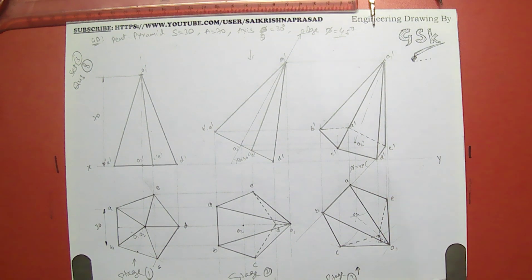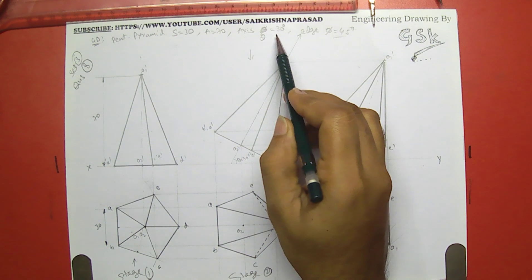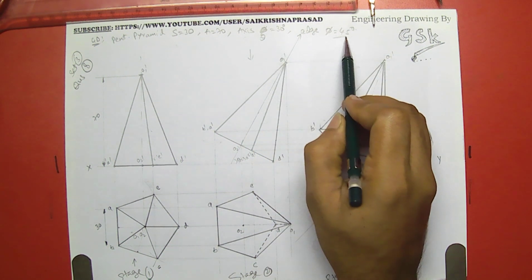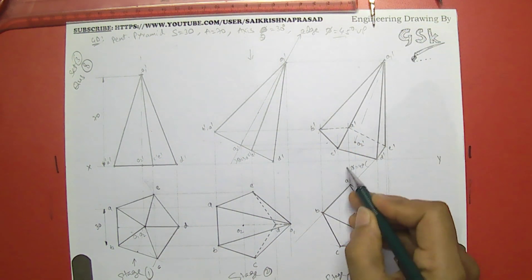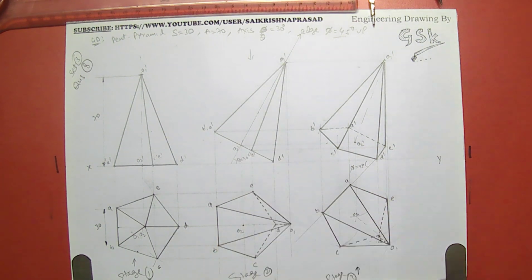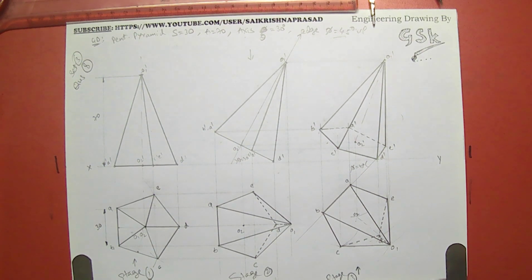In this way we draw the projections of a pentagonal pyramid with side 30 and axis 70, with the axis inclined at 30 degrees to the HP and the edge inclined at 45 degrees to the VP. This edge is at 45 degrees to the VP and the axis is at 30 degrees to the HP. With this we have finished the projections of the pentagonal pyramid. I hope everyone understood — please subscribe to the channel and follow it regularly for updates in engineering drawing and graphics. Thank you.